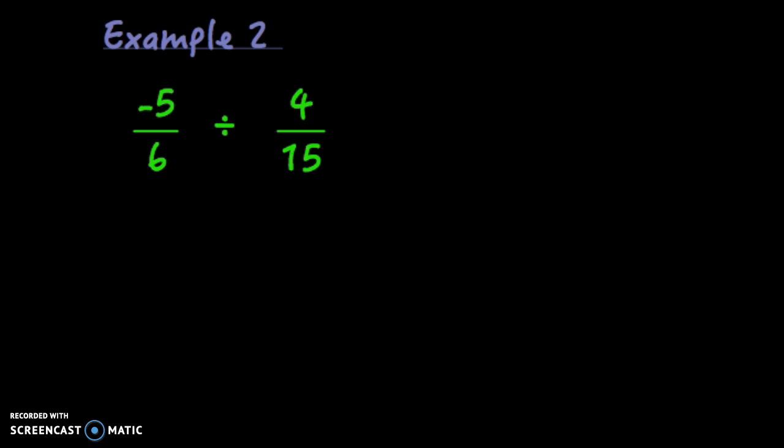Okay, the next one. Negative 5/6 divided by 4/15. We're going to do the similar process here. So I'll start out negative 5/6 times 15 over 4.